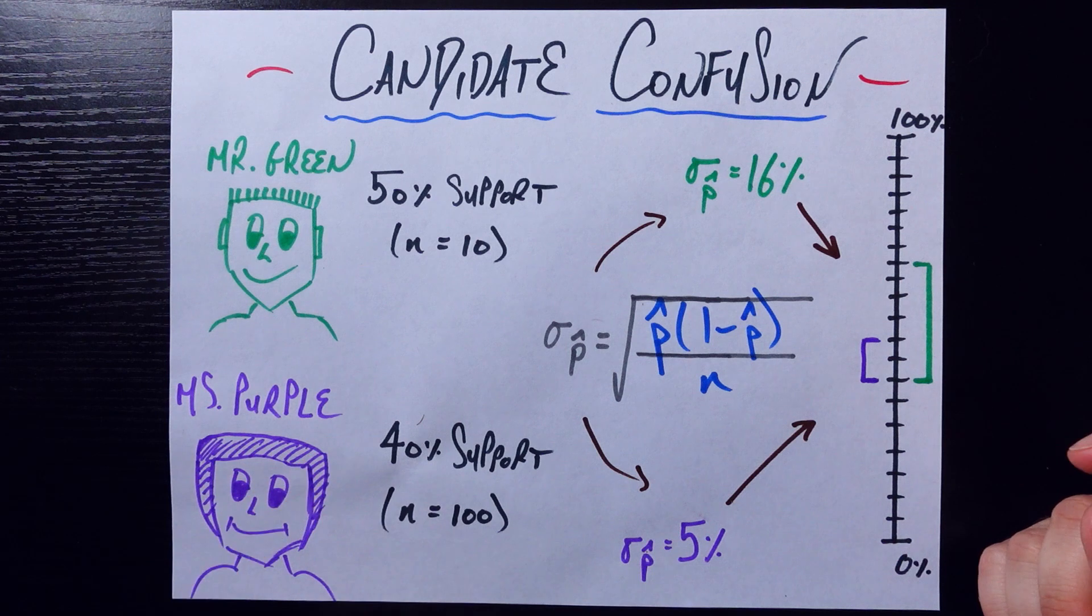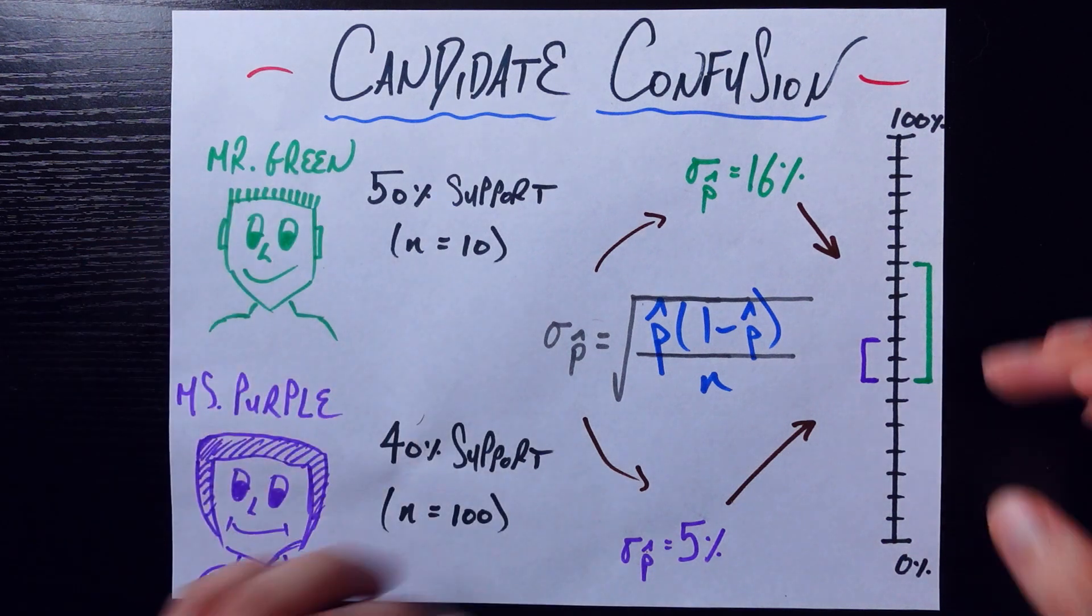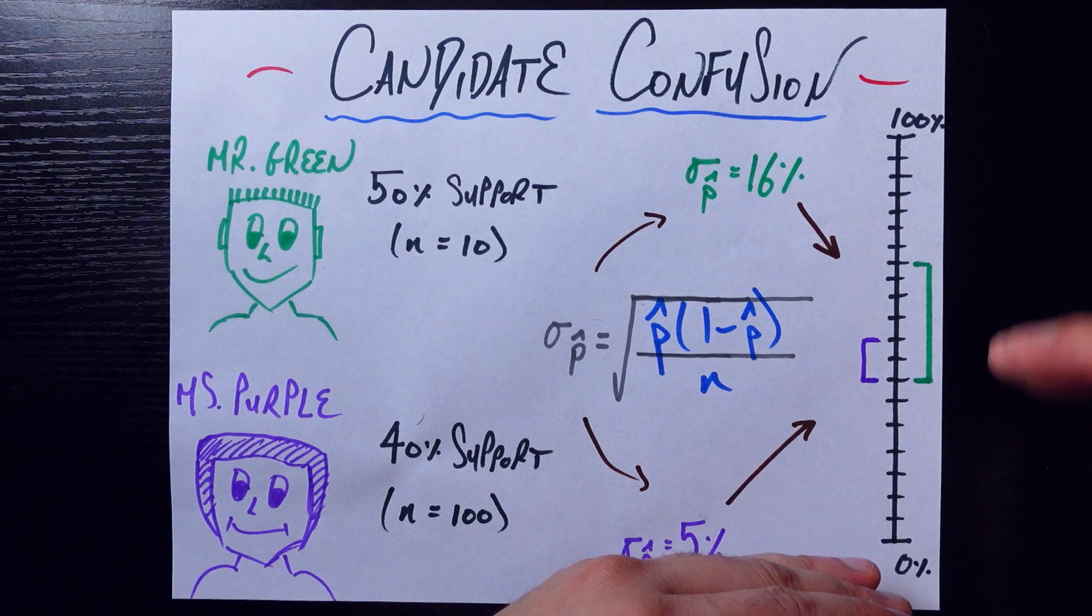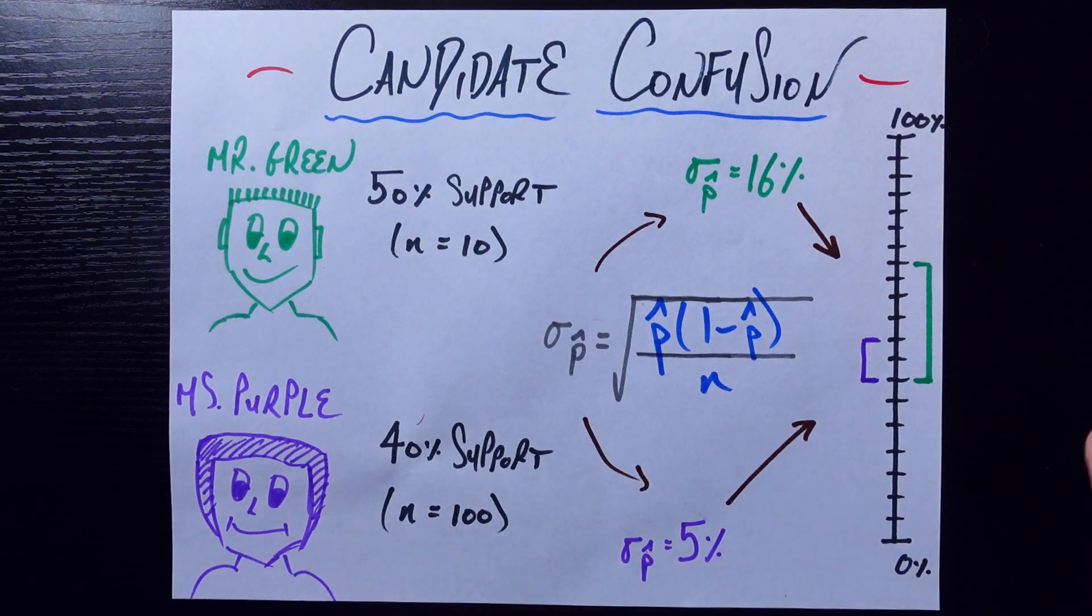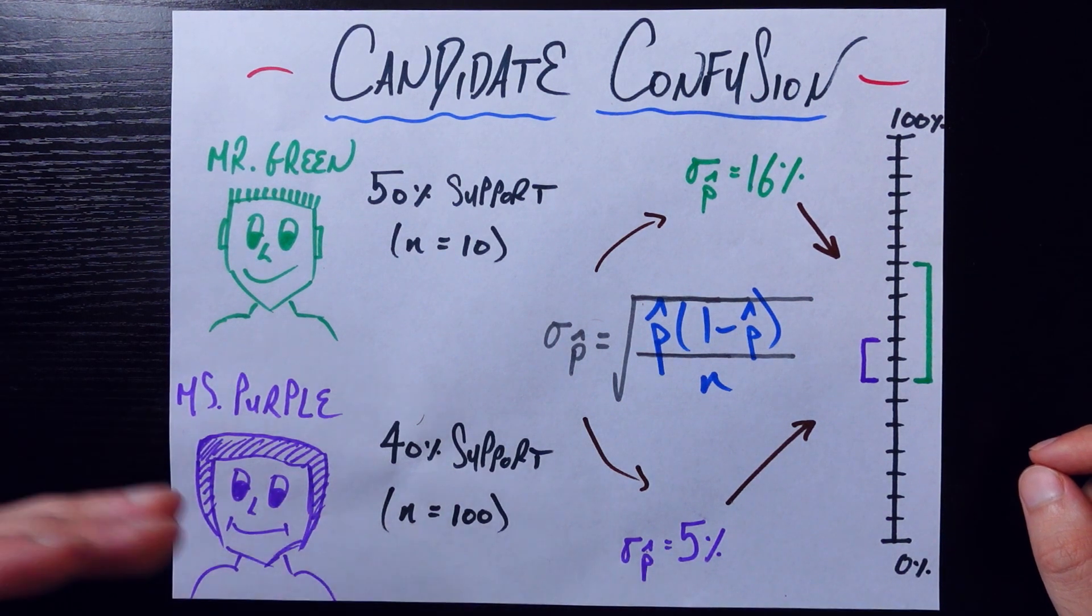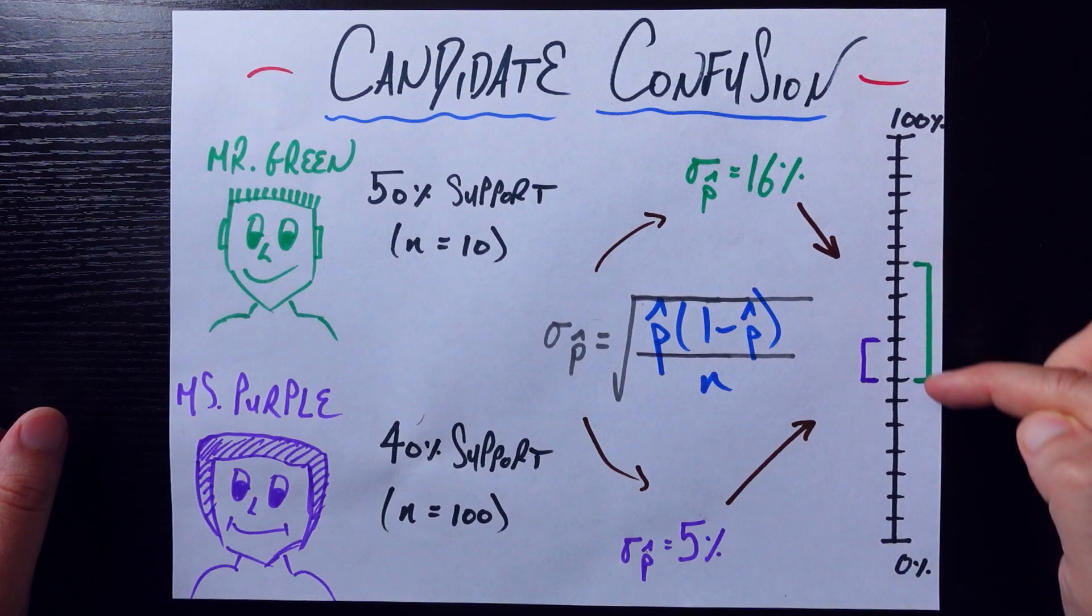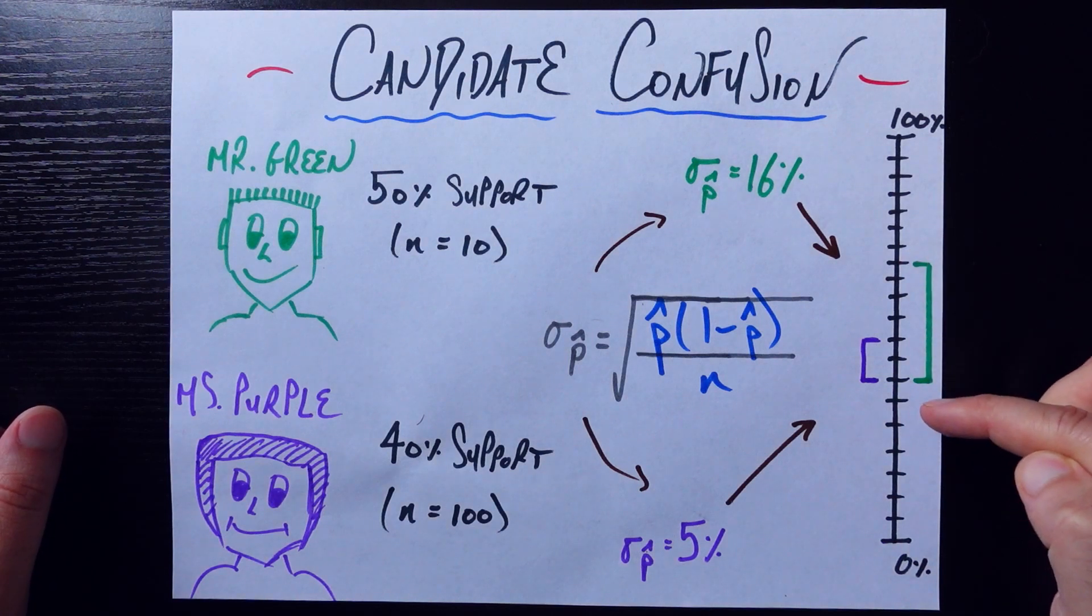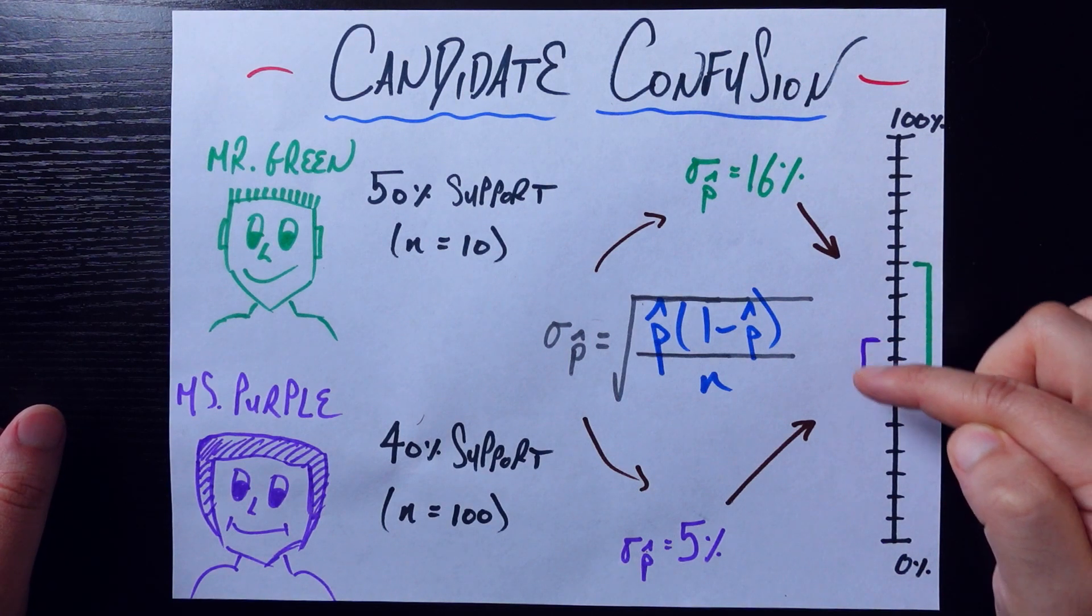And if we go ahead and plot these guys on a number line between 0 and 100%, and we do plus or minus 1 standard deviation for each candidate, we find that Mr. Green's range is this large one here, and Ms. Purple's range is just this small one here.